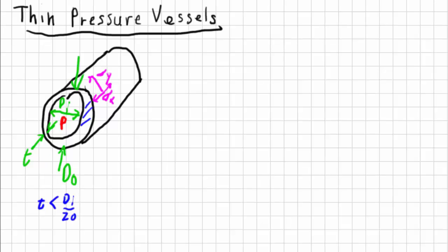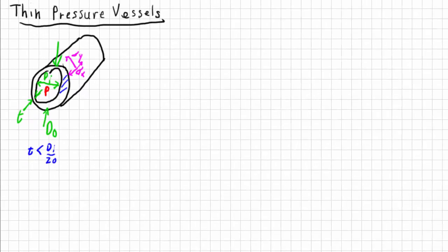So, let's do a problem based on that. Our formulas that we derived were that the stress in the x-direction, known as the longitudinal stress, or if it's a sphere, it would be the spherical stress, which is equal to the pressure times the inner diameter, all over 4 times the wall thickness.